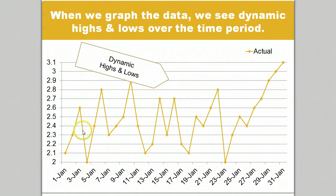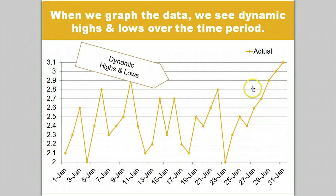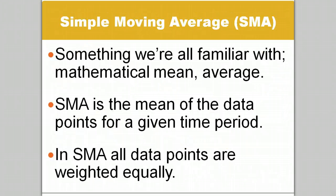You can see when the data is graphed that there are dynamic high and low points. While you can see a trend developing toward the end of the month, predicting what was going to happen earlier would be somewhat difficult. If we wanted to get a general idea of what was going on, we could use a simple moving average, or SMA.